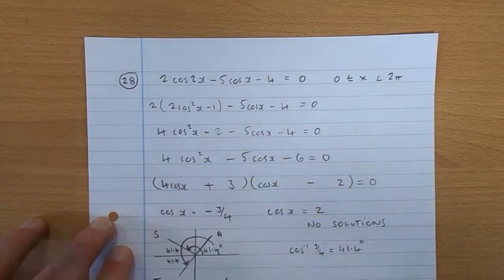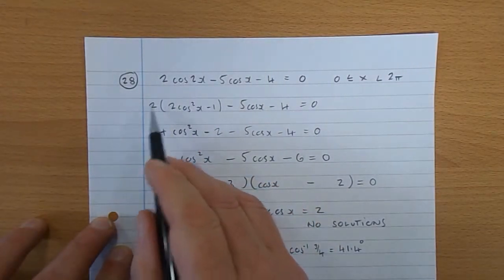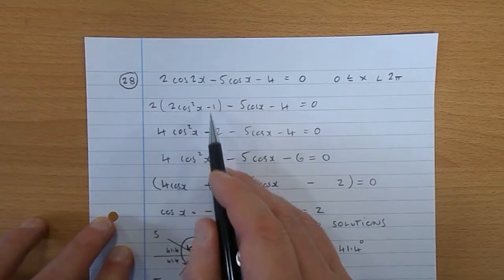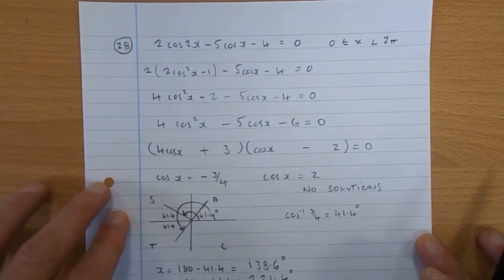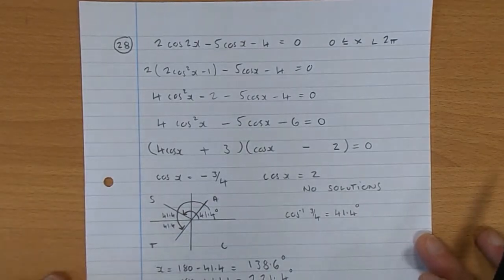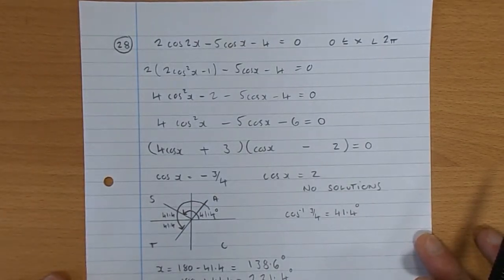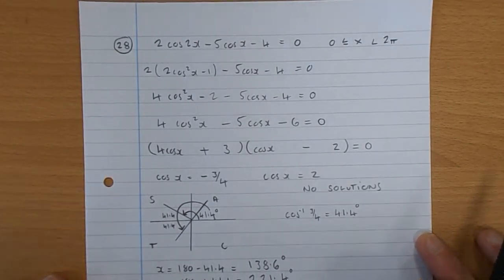Cos squared is cos cos. Multiply by 2, 2 times 2 is 4, take 2 ones are 2, take 5cosx take 4. Tidy it up a bit. We have 4cos²x take 5cosx take 6 equals 0.